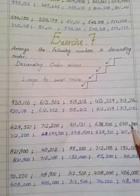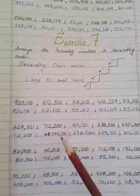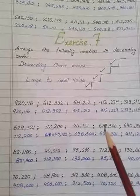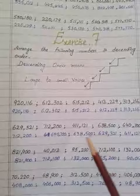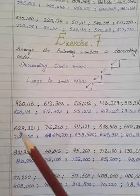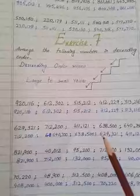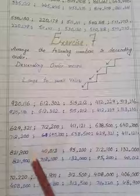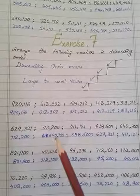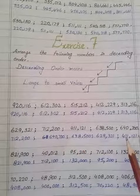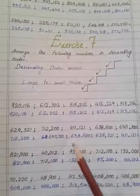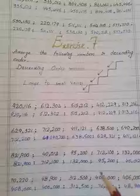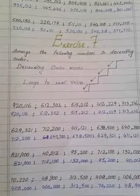Write 640,700 second. Next, between the two remaining numbers starting with 6, the one with 3 is greater, so write 638,500 third, then 629,321. The last is 411,121, which is our smallest. This is the descending order from largest to smallest. You can practice exercises 6 and 7 in your notebooks.